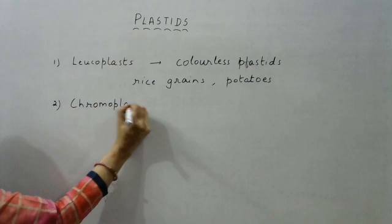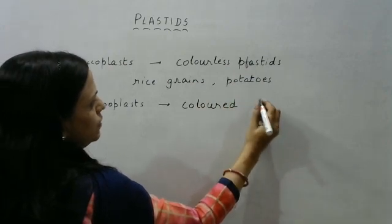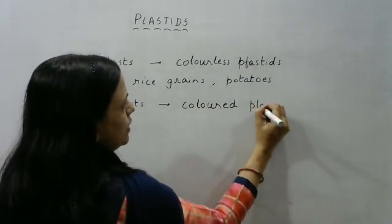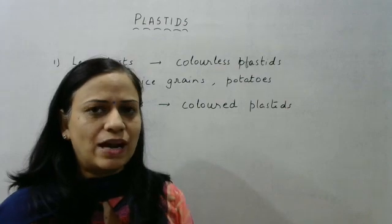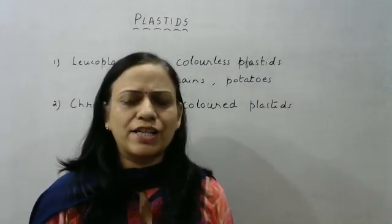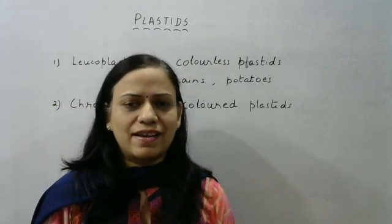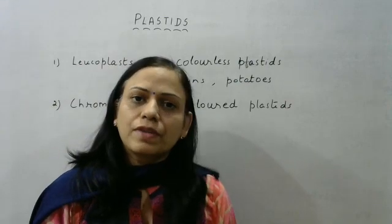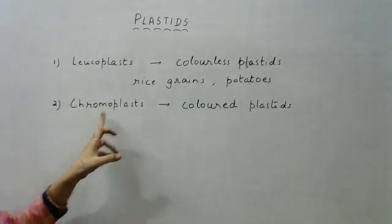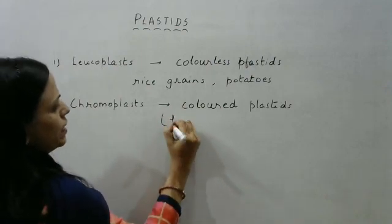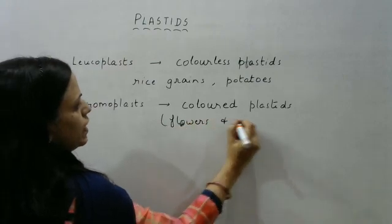The second type of plastids is chromoplast. Chromoplasts are basically the colored plastids, so they impart color to the various parts of a plant like flowers and fruits. You can see there are a variety of colors of flowers around us — red, blue, yellow, orange, purple, pink. How do they get that color? That color is basically due to the presence of chromoplasts, which are responsible for imparting color to the flowers and the fruits.